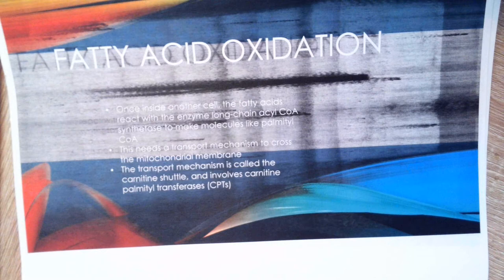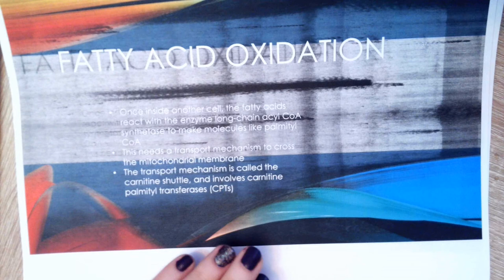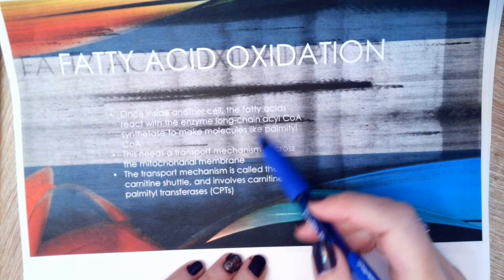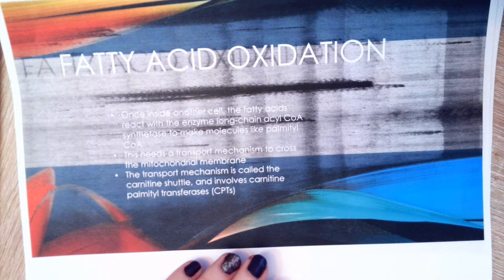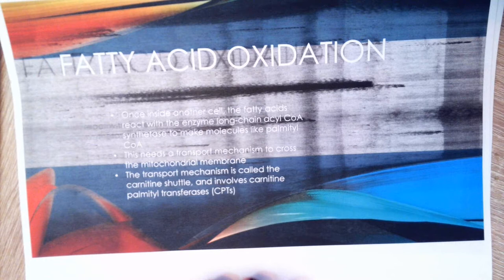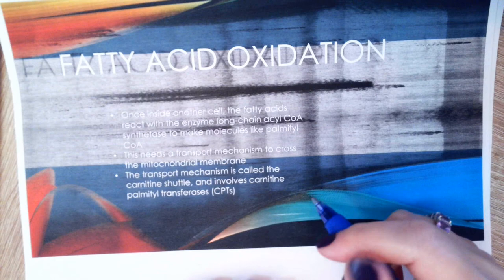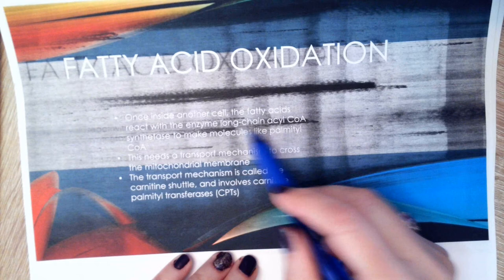Now we've taken those fatty acids from the adipocyte, and they're inside another cell — let's say a muscle cell. We're going to start beta oxidation, where we prepare the fatty acids to go into the mitochondria. The fatty acids entering the muscle cell are worked on by an enzyme called long-chain acyl-CoA synthetase, which converts them into intermediary products that can be transported into the mitochondria and converted into acetyl-CoA for the Krebs cycle.